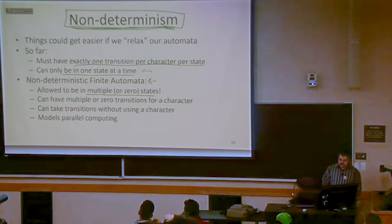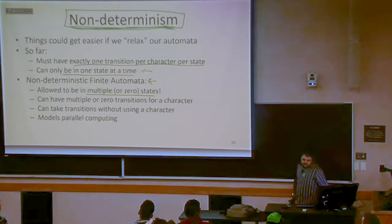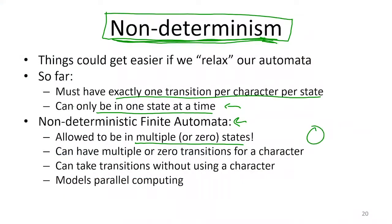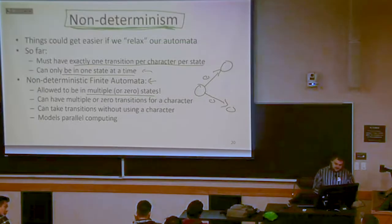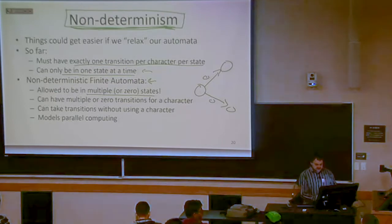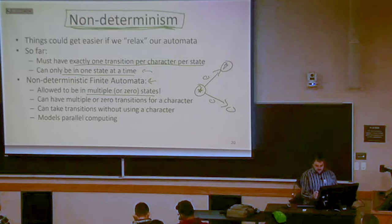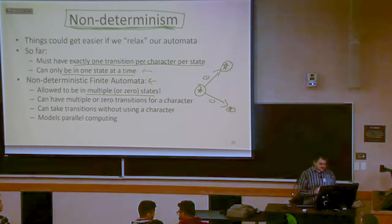We're also going to be allowed to have multiple outgoing transitions from one state for a character. So we're going to be able to have some state where we say go to that state as well as that state on a zero. We're allowed to have multiple outgoing transitions for some character — you can take a state and on a zero you go into both of these other states. You have multiple outgoing transitions.